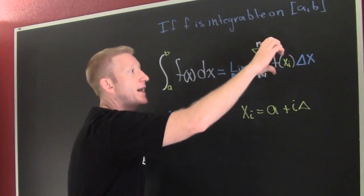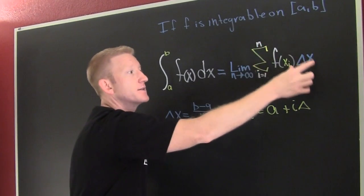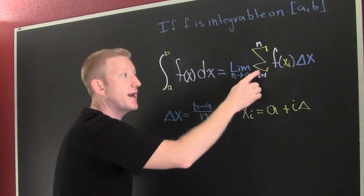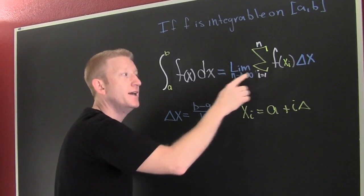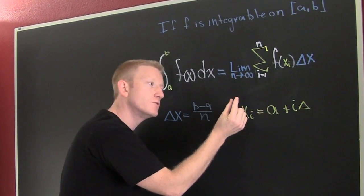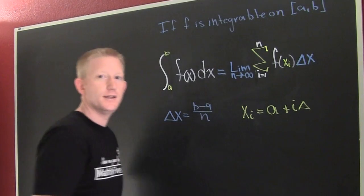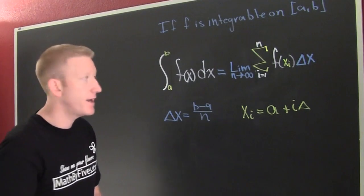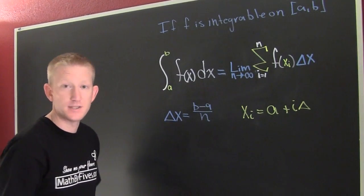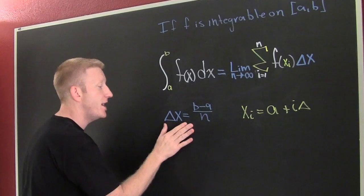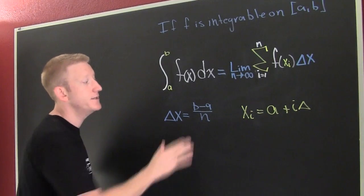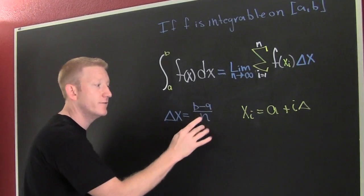So what are you doing? You're taking the height times the width, getting the area, and then adding them up. Then you're making the interval so small that you're able to get a very, very good approximation for this integral. And the width of the interval is b minus a over n.